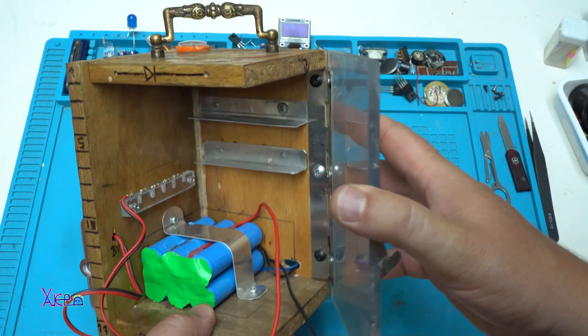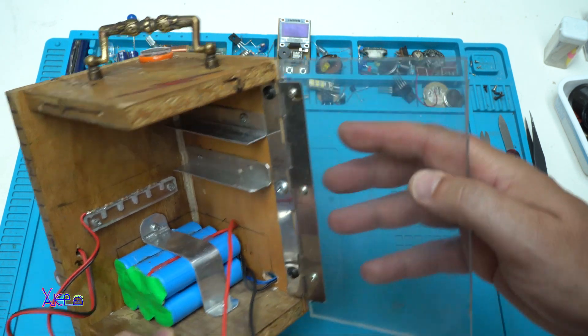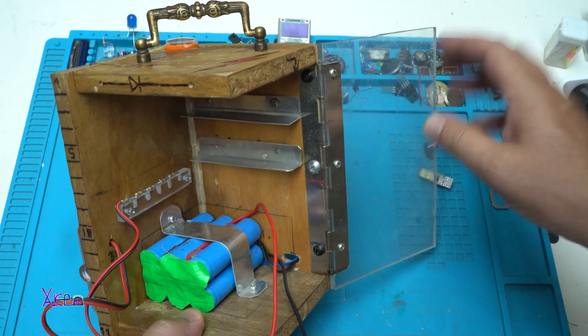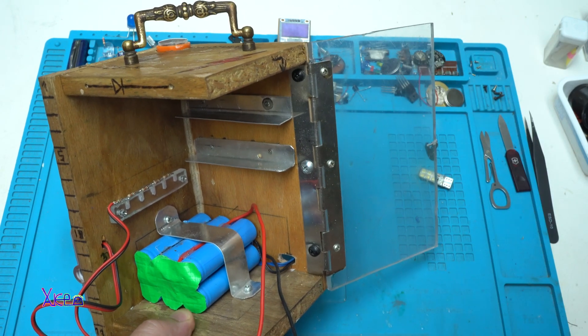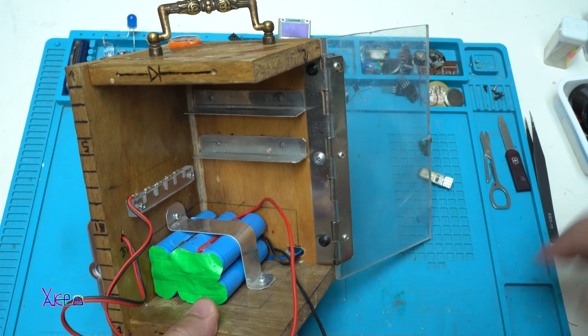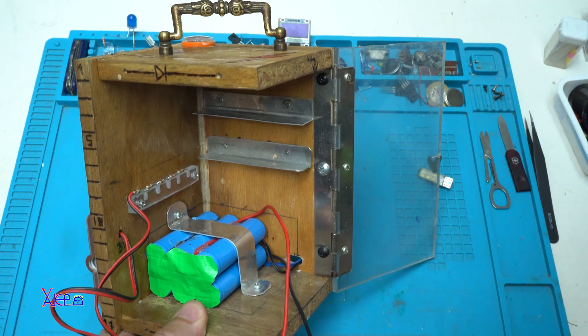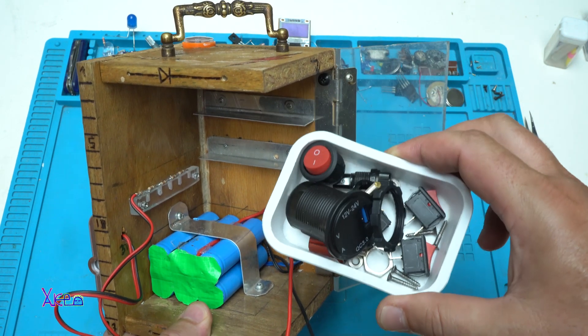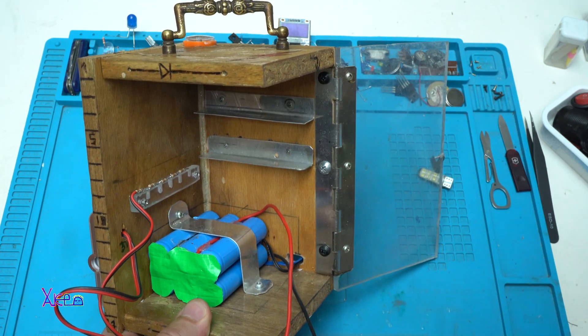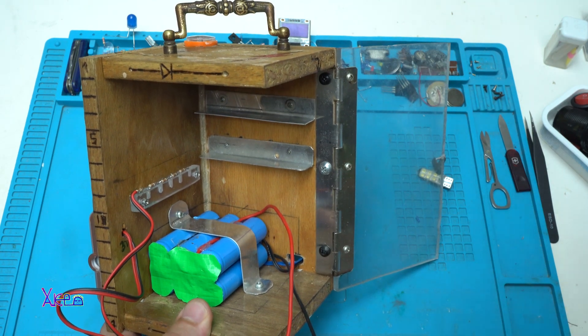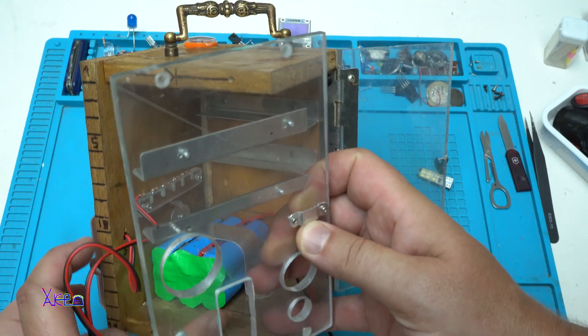And in my next video, I will show you the complete working homemade camping power station. I will use all these electronic components that will be placed on the front panel like this.